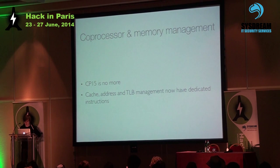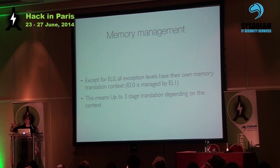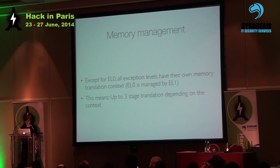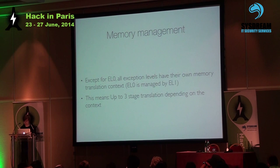For the three privileged levels, we obviously need different memory translations because each operating system must not run in the same address space as another. In the worst case you have a three-stage translation of memory addresses from virtual to physical, which seems to be fast enough. Each operating system can still manage its own memory without any penalty, with no need to call your hypervisor for that.